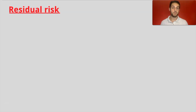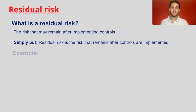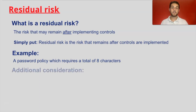Next up, residual risk. Residual risk may not be in the CISA manual, but there have been questions about it. Residual risk is the risk that may remain after implementing controls. For example, a password policy requiring eight characters is a control, but just because a control is in place doesn't mean there's no risk. We implement controls to mitigate risk, so residual risk still exists. Residual risk is also known as net risk.